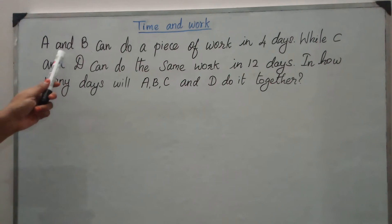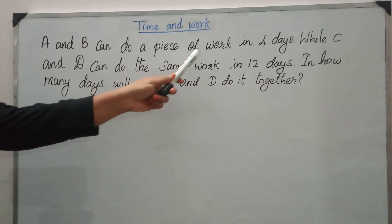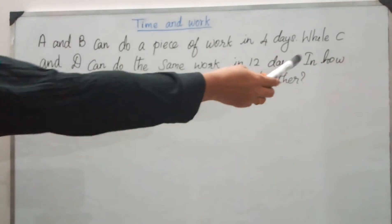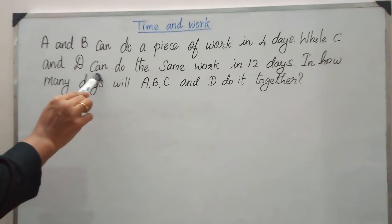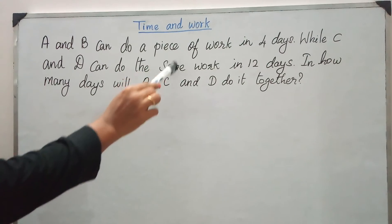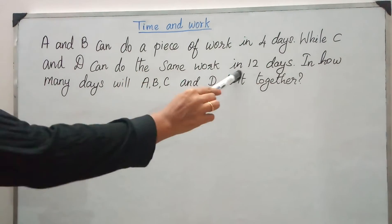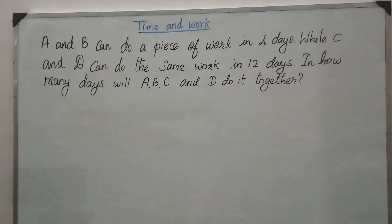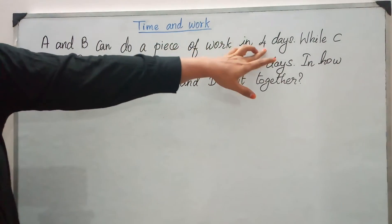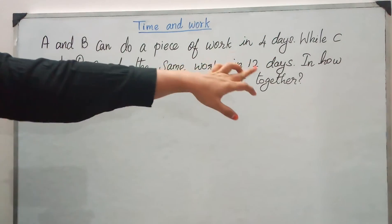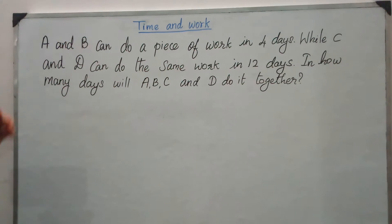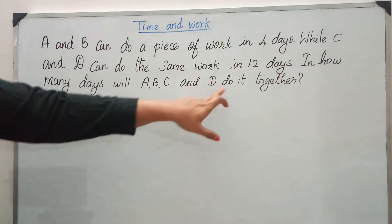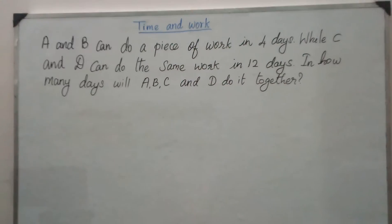Say A and B can do a piece of work in 4 days, while C and D can do the same work, just note the same work, in 12 days. The work is the same here; only the time and the persons differ. A and B can complete in 4 days while C and D can complete in 12 days. So in that case, how many days will A, B, C, and D do it together? This is our question.